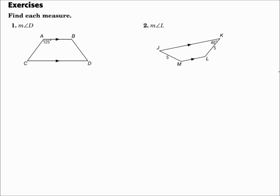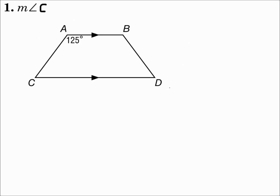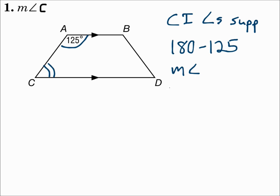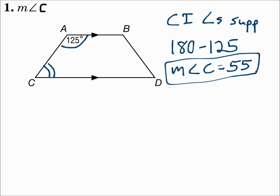Find each measure. Number one: find the measure of angle C. This is a trapezoid, which means you have one pair of parallel sides. When you have parallel sides cut by a transversal, you have consecutive interior angles, and consecutive interior angles are supplementary. So if the measure of angle A is 125, then 180 minus that is 55, and that's the measure of angle C.